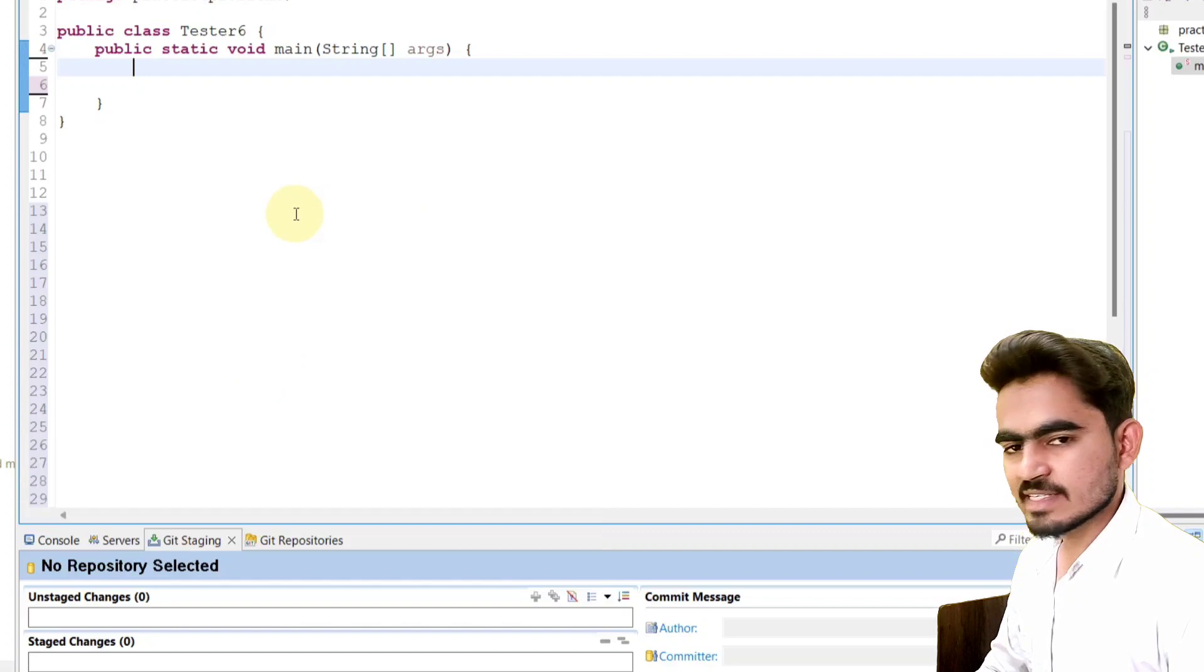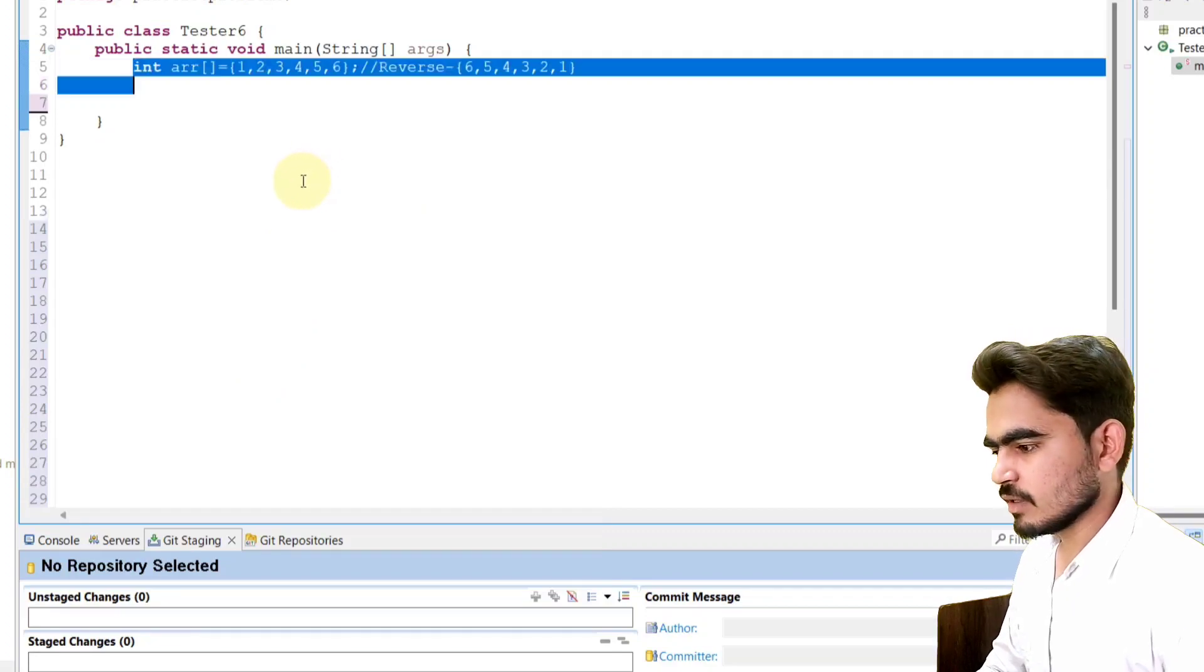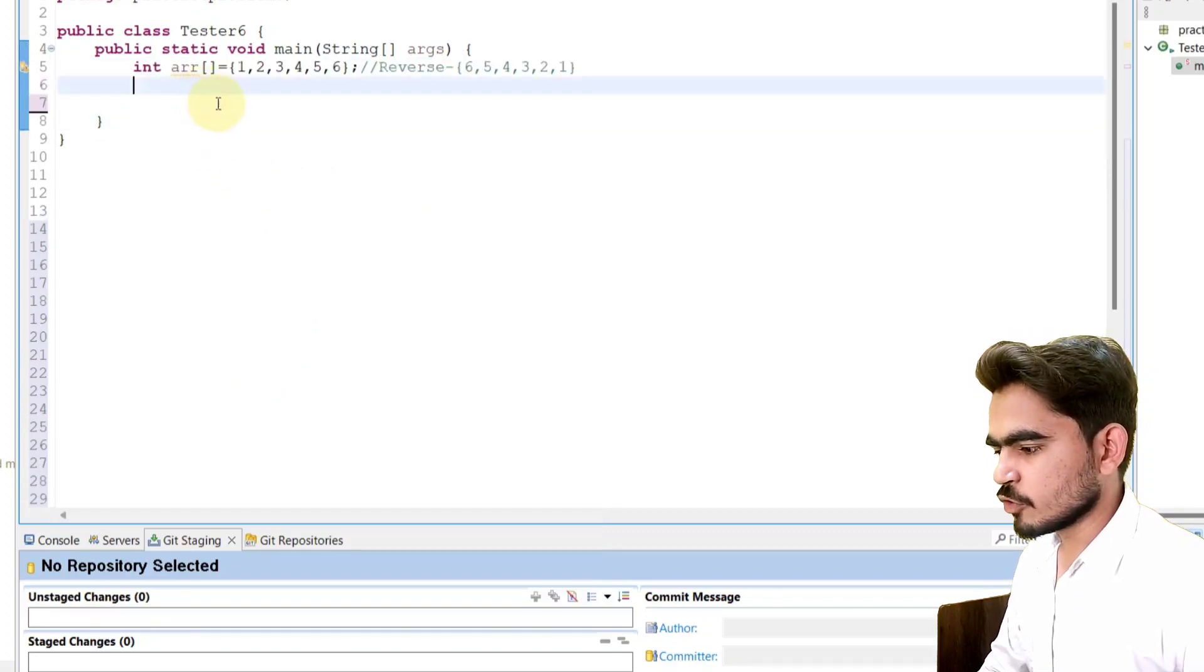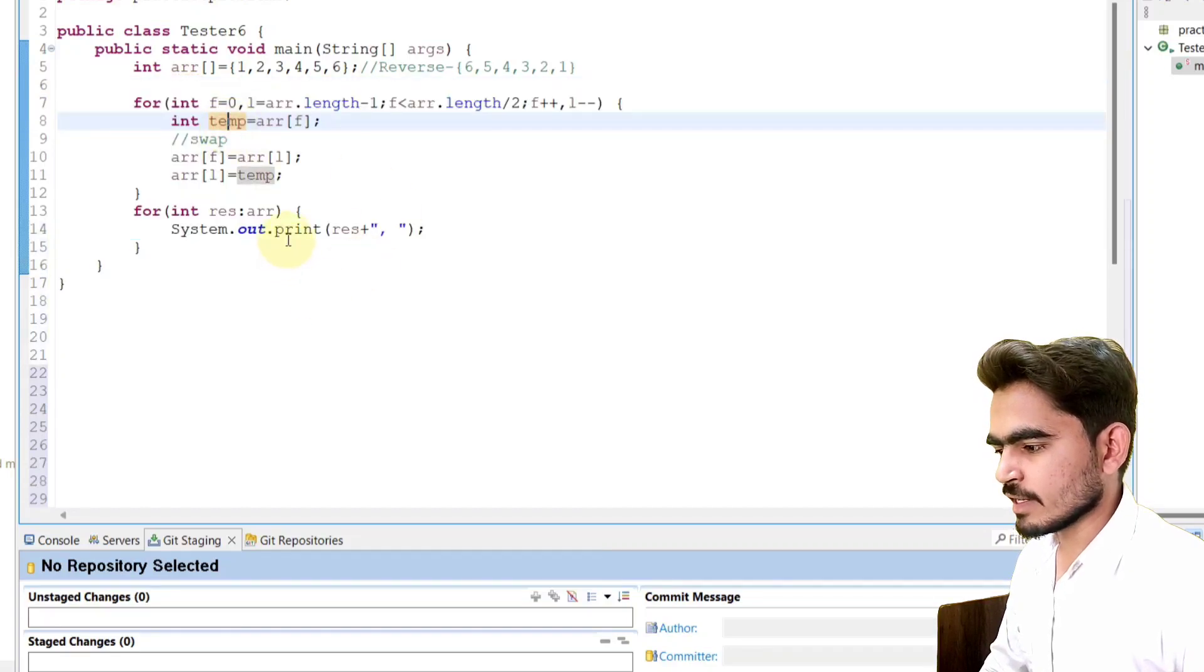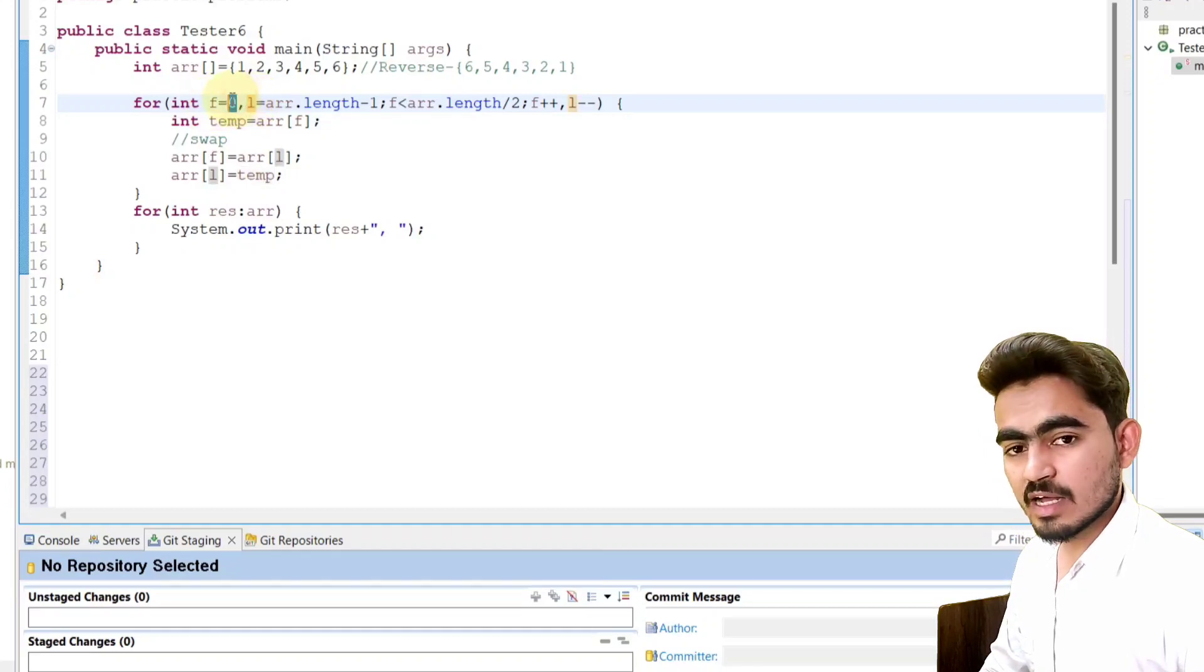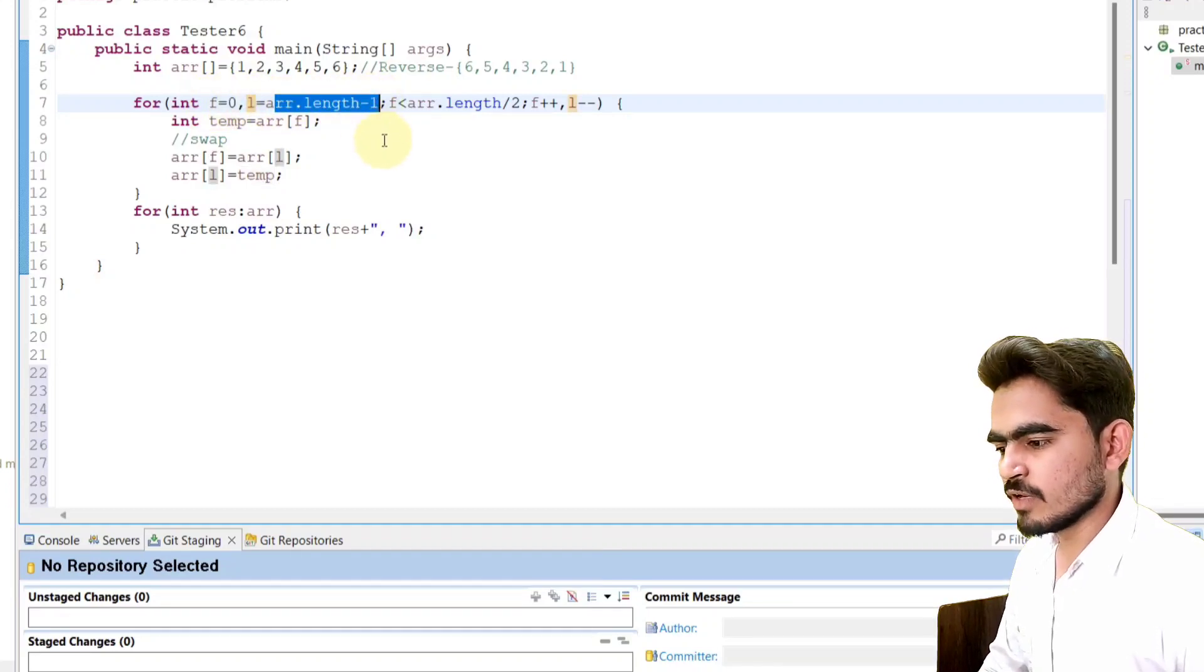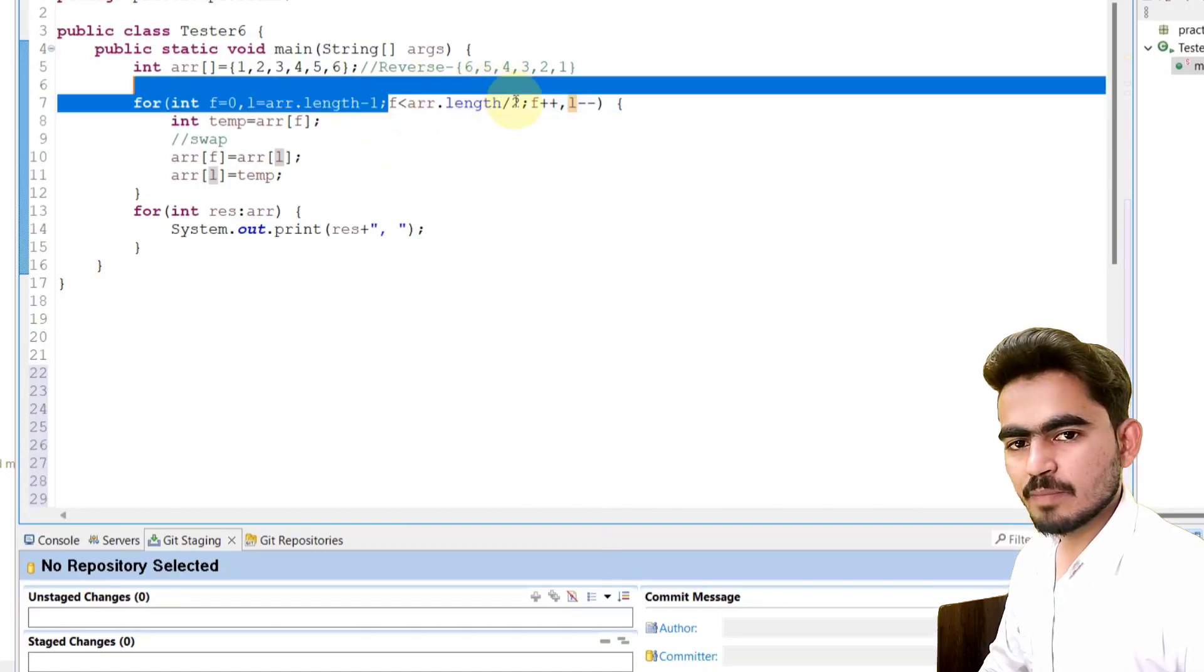Here I write array as it is, which is given in the problem statement. Now I wrote one for loop, I declare two variables f and l. f starts from first index, l starts from last index. Array.length minus 1. We will run this for loop until f less than array.length by 2.